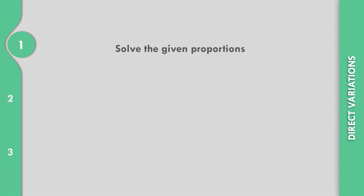Let us solve the given proportions. 5 over 2 is equal to 50 over x. We need to solve for the value of x. Let us multiply both sides with 2x. So cancel 2, that becomes 5 times x, that is equal to 5x. And then, if we multiply this on the right side with 2x, cancel x, 50 times 2, that is equal to 100.